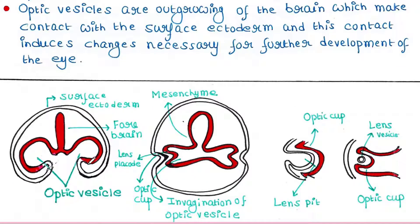Here is the ectoderm layer — the outermost layer that is the surface ectoderm. Here we have the forebrain and the two optic vesicles.